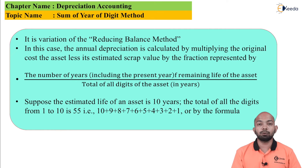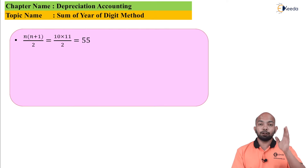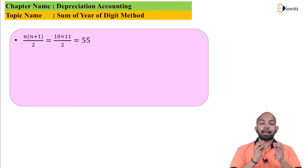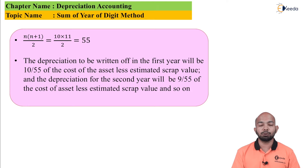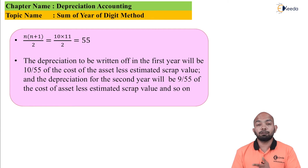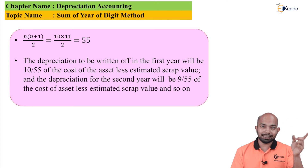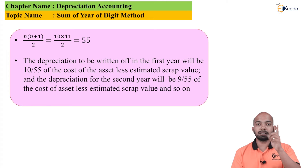So this is the method when you have to talk about the Sum of Years Digit method. The first thing you do is total all the digits based on the estimated life of the asset, which gives you the denominator, and on the numerator the years are listed in reverse descending order.